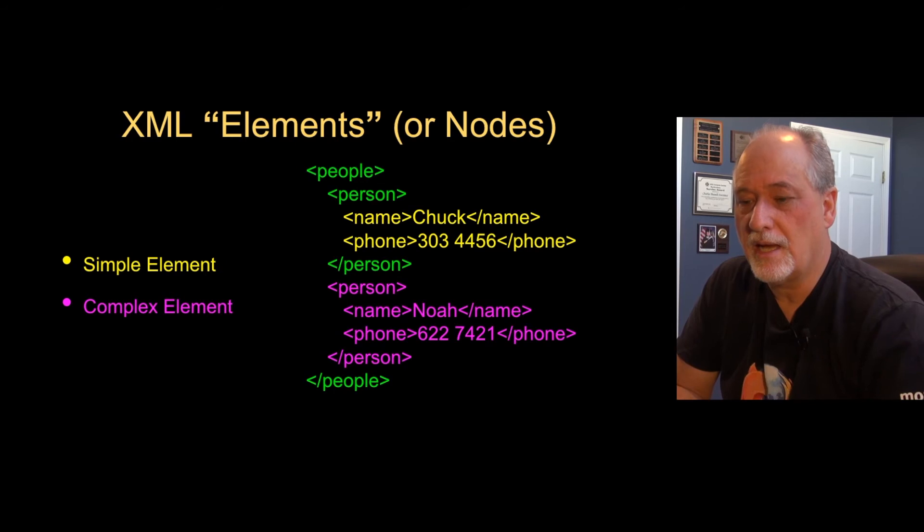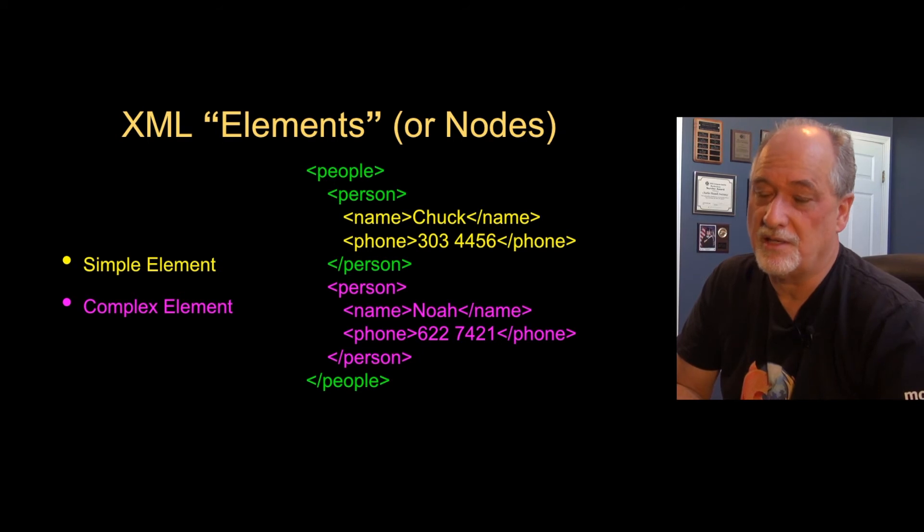One of the concepts is that there is a hierarchical structure within an XML document. There are parent nodes and child nodes. You can think of these as simple nodes, that is a tag and some data, or a complex element that has a tag that includes other tags, some child tags.